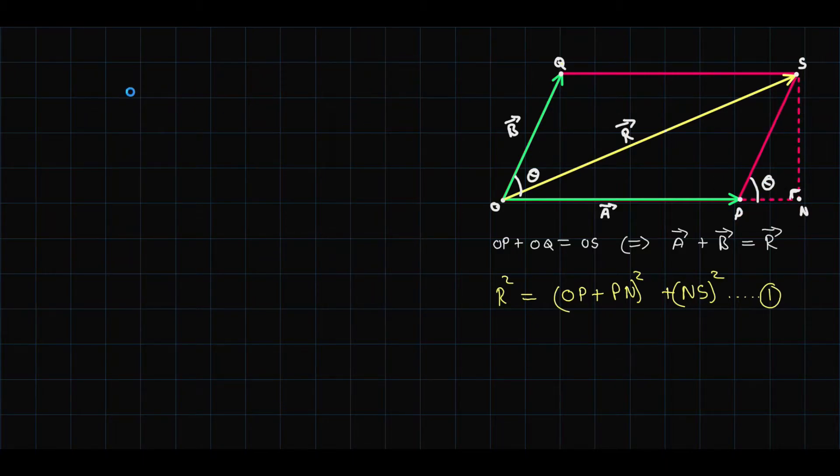So the sine theta of this triangle would be NS over PS equals NS over PS. Now to find the value of NS we have to cross multiply this. So we get NS equals PS sine theta.